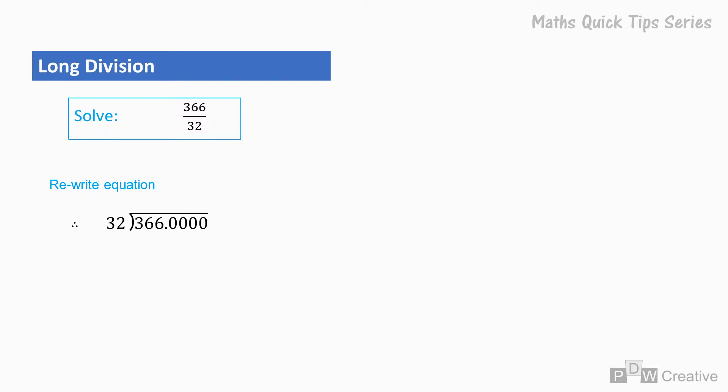I'm going to add four decimal places because I think the answer will go into decimals. Depending on the equation, you may choose to go to less or more decimals. This all depends on how much accuracy is required.